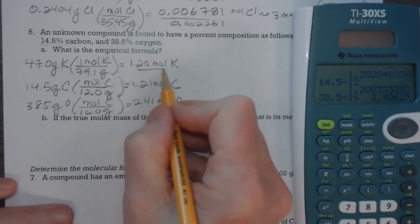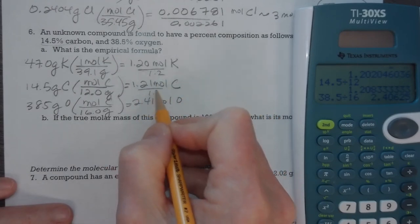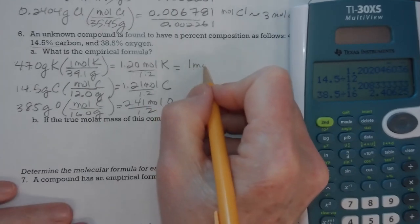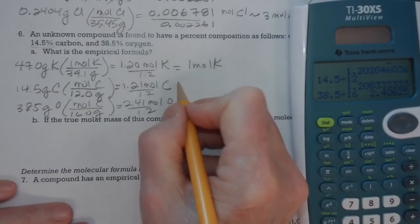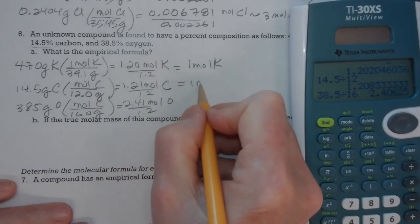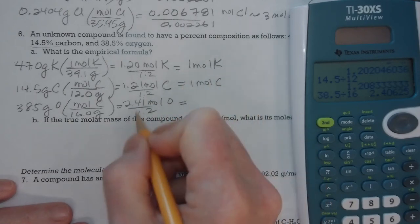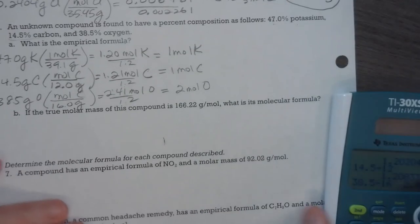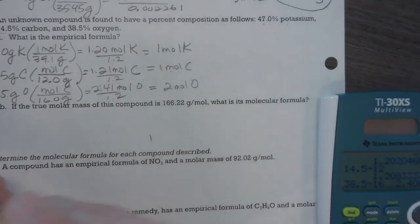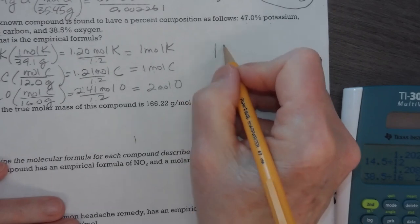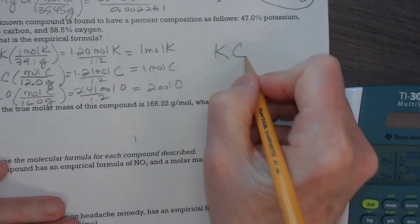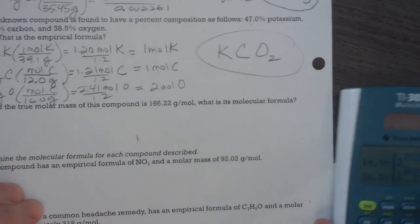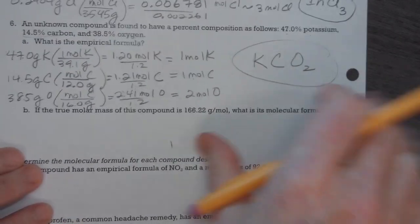The smallest number is 1.2. When I divide these by 1.2, I get 1 mole of potassium, I get 1 mole of carbon, and I get 2 moles of oxygen. So my ratio is 1 to 1 to 2. So it's potassium, 1 carbon, and 2 oxygens. That is my empirical formula for this compound.